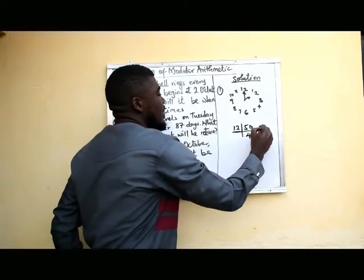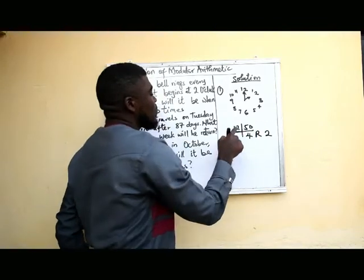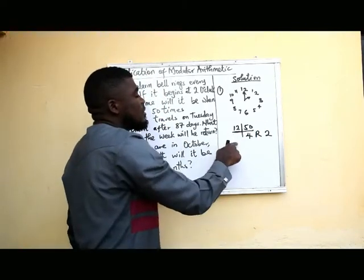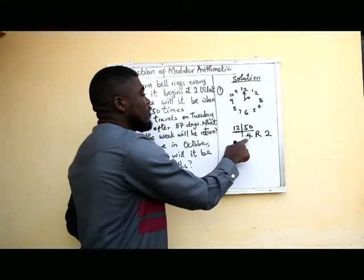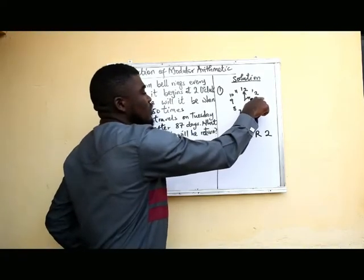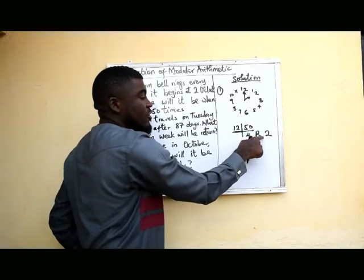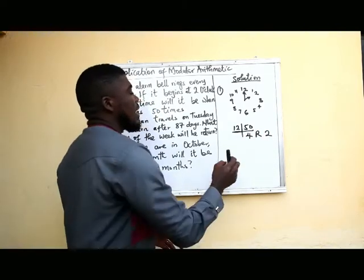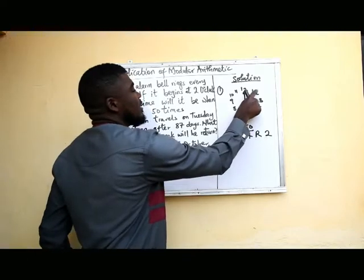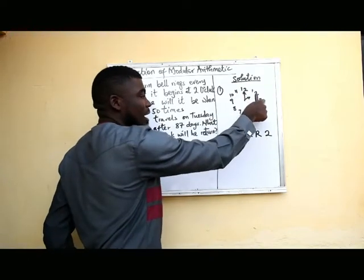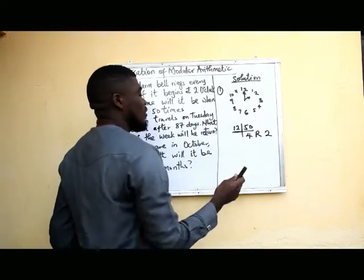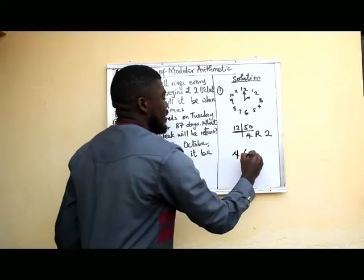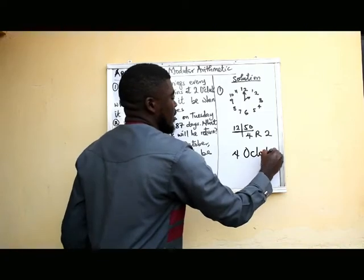There will be a remainder of 2, because 12 times 4 is 48. After wrapping round for the 4th time, it goes 2 more steps. All we need to do is count 2 after 2 o'clock: 1, 2 — that gives us 4 o'clock. So our answer is 4 o'clock.